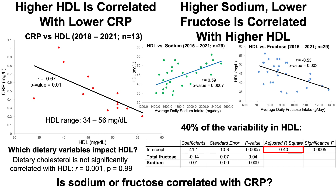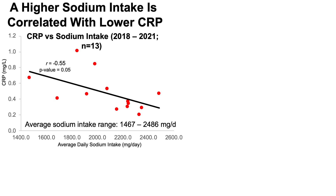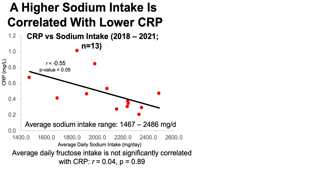If sodium and fructose are impacting HDL, are they also directly correlated with changes in CRP? A higher sodium intake is correlated with a lower CRP, and this is statistically significant with a p-value of 0.05 — again within the range of about 1,500 to 2,500 milligrams of sodium per day. For my next blood test, I'm going to experiment with a little bit higher sodium, maybe around 2,700 milligrams per day. I don't want to go too high because it could potentially increase my blood pressure and I've noticed some correlations with higher creatinine and glucose. Interestingly, my average daily fructose intake was not directly correlated with CRP.